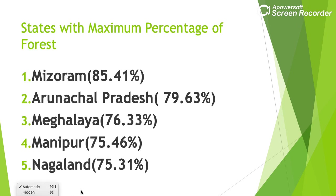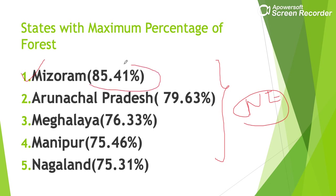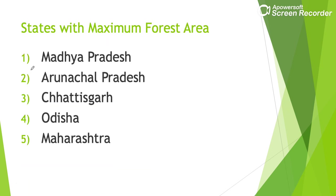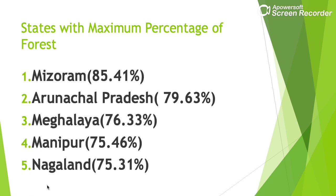Percentage-wise, the top states are all North Eastern states. Mizoram tops with 85.41% of its area under forest. Arunachal Pradesh is second with around 80% of its area as forest — notably, Arunachal Pradesh is second both area-wise and percentage-wise. Third is Meghalaya, then Manipur, and then Nagaland.